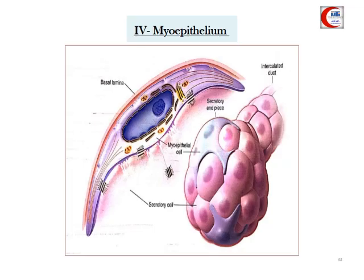Myo epithelium acts like muscle — 'myo' meaning muscle. Its cytoplasm contains actin and myosin filaments, giving it a contractile function. These cells are star-shaped or basket-like and surround the secretory cells of exocrine glands. When they contract, they push secretion through the ducts.